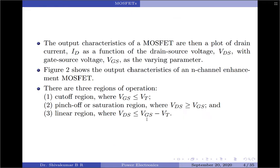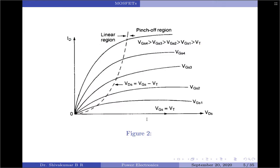The output characteristics of a MOSFET are a plot of the drain current ID as a function of the drain-to-source voltage VDS, with the gate-to-source voltage VGS as the varying parameter. The figure here shows the output characteristics of an N-channel enhancement type MOSFET. There are three regions of operation: the cut-off region where VGS is less than the threshold voltage; the pinch-off region where VDS is greater than or equal to VGS minus VT; and the linear region where VDS is less than VGS minus the threshold voltage.